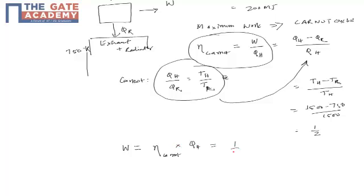Efficiency of Carnot we got half into QH we already got to be 200. So, 200 megajoules. This comes out to 100 megajoules. So, 100 megajoules is the answer. The maximum work that can be produced.